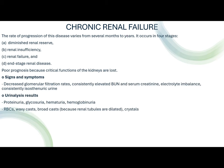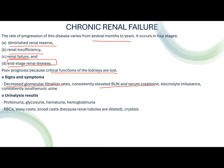Chronic renal failure progresses over several months to years and occurs in four stages: diminished renal reserve, renal insufficiency, renal failure, and end-stage renal disease. Poor prognosis due to loss of critical kidney functions. Signs include decreased GFR, consistently elevated BUN and creatinine, electrolyte imbalance, and consistently isosthenuric urine. Urinalysis: proteinuria, glycosuria, hematuria, hemoglobinuria, RBC casts, waxy casts, and broad casts — broad casts visible because renal tubules are already dilated. Crystals would also be visible.